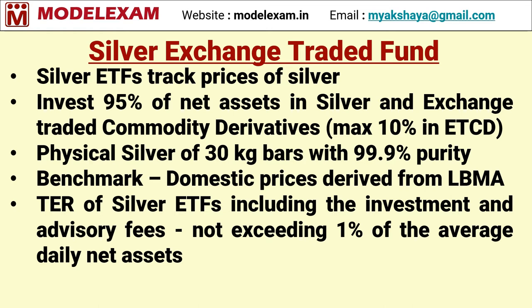The TER of silver ETF — that is, the total expense ratio including investment and advisory fees — should not exceed 1 percentage of average daily net assets. Expenses are calculated on a daily basis and they are reduced from the NAV.